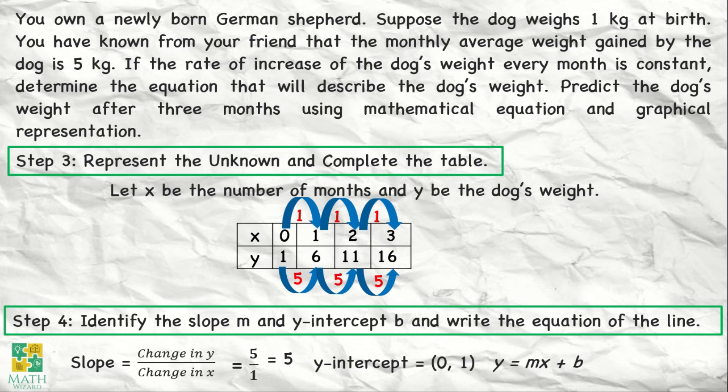Next is we need to write the equation of the line. So, meron tayong y is equal to mx plus b, m is our slope, and b is the y-intercept. Ano yung slope natin? 5. Ano yung y-intercept natin? At point 0, 1. So, b is equal to 1. Ibig sabihin, ang ating equation of the line is y is equal to 5x plus 1.